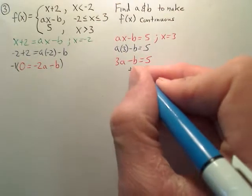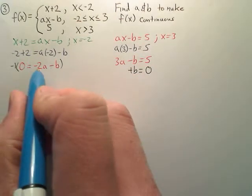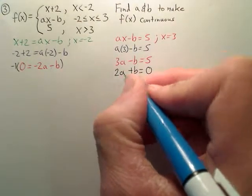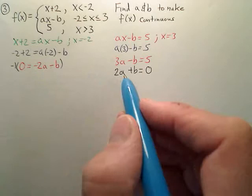That becomes a positive b, and this is the opposite, it will become positive 2a. So I multiply by negative 1, and I wrote it right here.